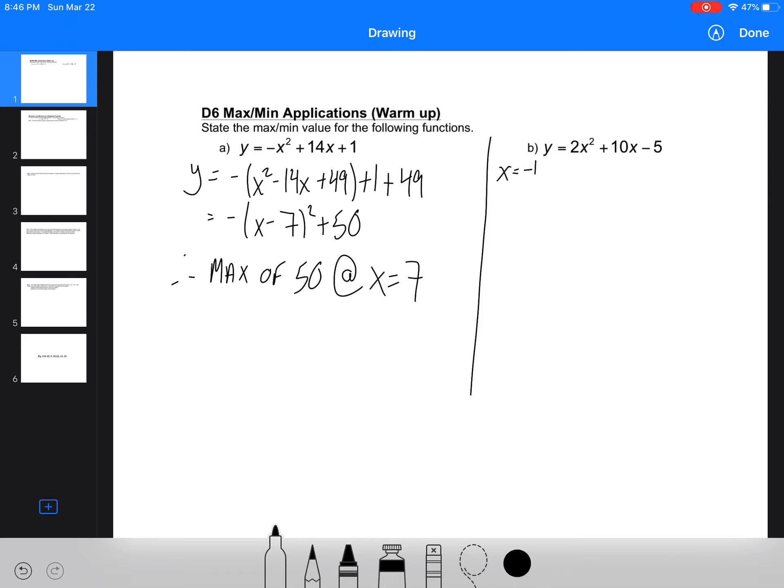Now, if I wanted to find it using negative b over 2a, so our x value is negative b over 2a, we'd have x equals negative 10 over 2 times 2, which is negative 10 over 4, so negative 2.5. And then we're just going to substitute in to find our y value. So we've got 2 times (-2.5)^2 plus 10 times (-2.5) minus 5. 2.5 squared is 6.25, times 2 minus 25 minus 5 is negative 17.5. So therefore, in this case, we have a minimum because we have a positive a value of negative 17.5 at x equals negative 2.5.